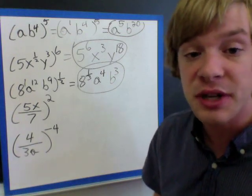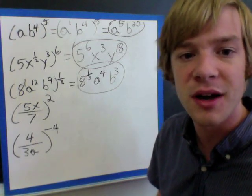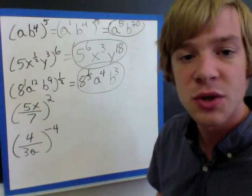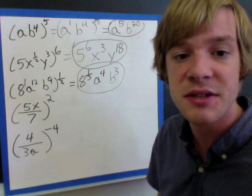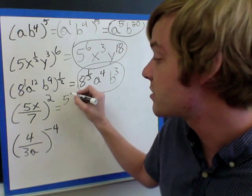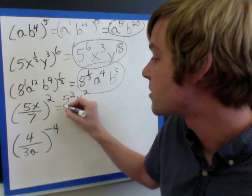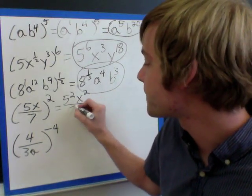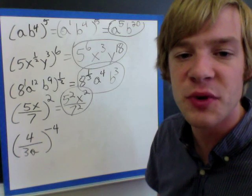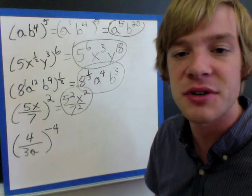With the next example, I've got a fraction — this doesn't really change how we're doing things, it just changes the positions of our numbers and variables. I've got 5x over 7 raised to the 2nd power, so I'm going to bring that 2 in and raise everything on the inside to the 2nd power, giving 5 squared over 7 squared. If you wanted to replace 5 squared with 25 and 7 squared with 49, that works too — either answer is acceptable.